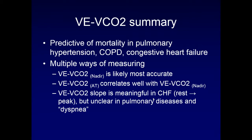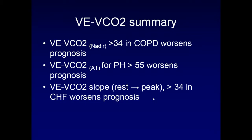In summary: VE/VCO2 is predictive of mortality in pulmonary hypertension, COPD, and congestive heart failure, and there are multiple ways to measure it — you must be clear which method was used in any given study. The VE/VCO2 nadir is likely the most accurate, at least in normals, but VE/VCO2 at anaerobic threshold correlates nicely with the nadir and has been well-studied in sick patients. The slope is important in CHF from rest to peak, but is unclear for pulmonary disease. A VE/VCO2 greater than 34 worsens prognosis in COPD; greater than 55 at AT worsens prognosis in PH; and a rest-to-peak slope greater than 34 worsens prognosis in CHF.